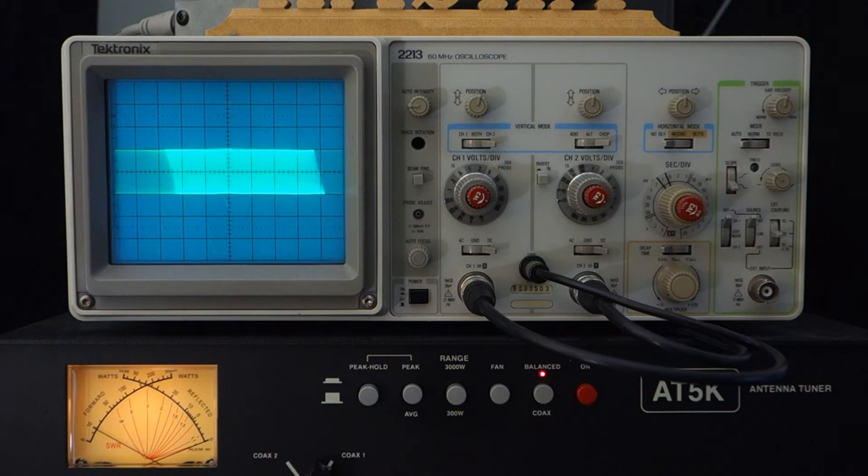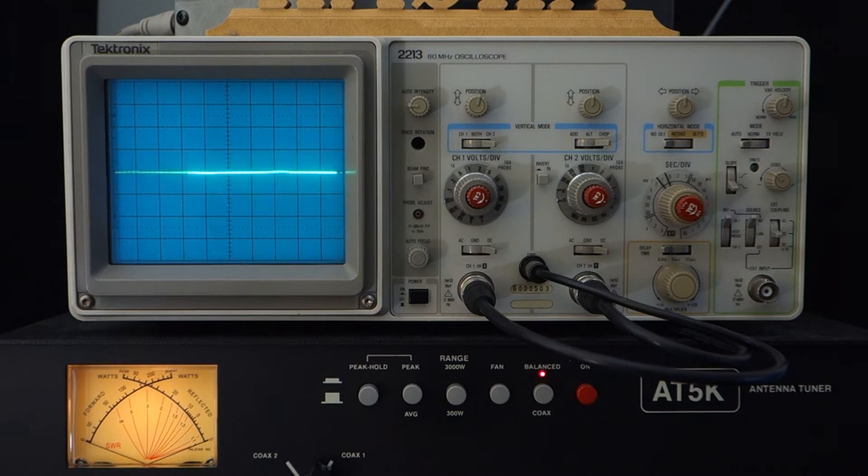So let's look at a sideband signal now using that method, and we'll be peaking to 40 watts instead of just the plus or minus one division at 10 watts. Okay, this is a test transmission, one, two, three, four, five, one, two, three, four, five.